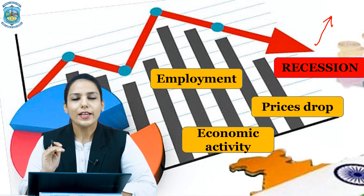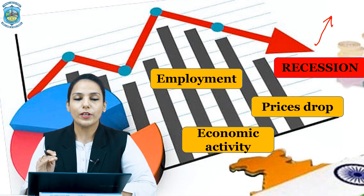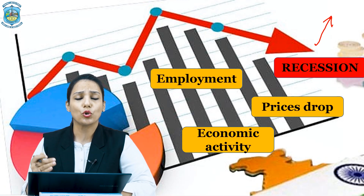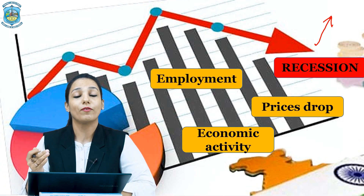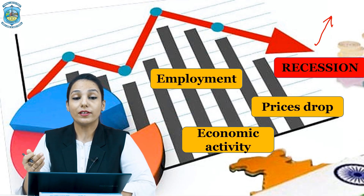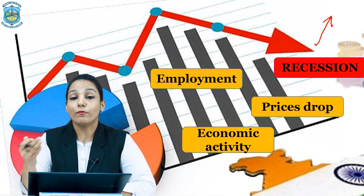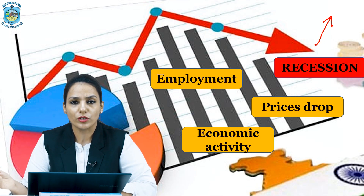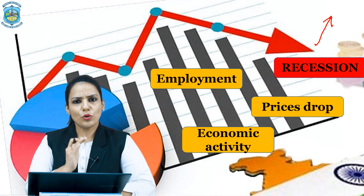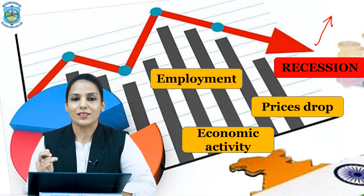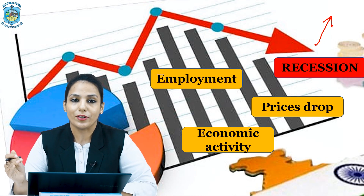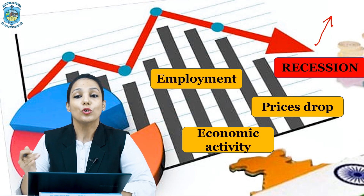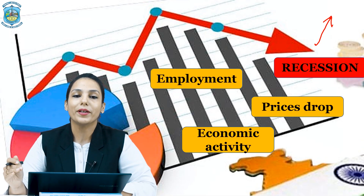The government can cause Reflation by decreasing interest rates, lowering taxes, modifying the money supply, or increasing infrastructure expenditure. The major goal is to increase economic activity and to persuade customers to spend more money.